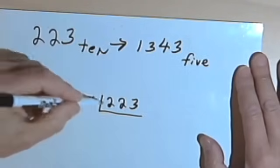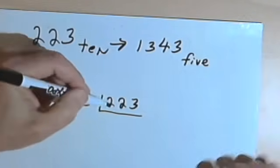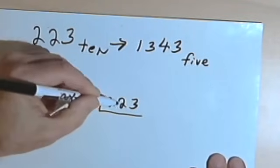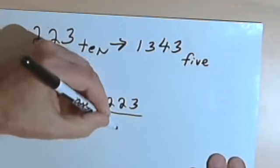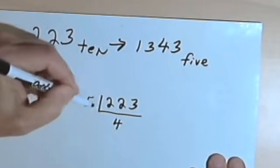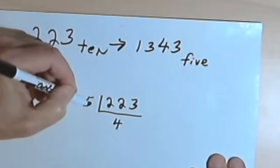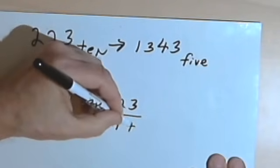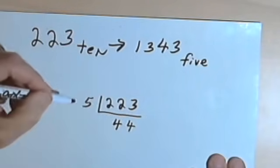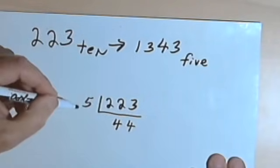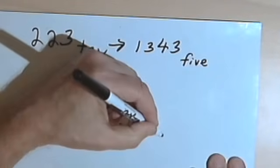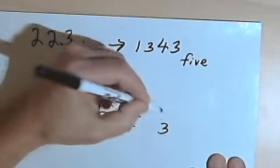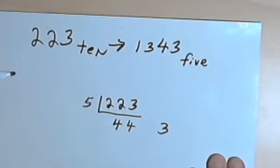5 goes into 223 — it goes into the 22 part 4 times with 2 left over, and then 5 into 23 is also 4, giving a remainder of 3. I'm going to write that remainder of 3 off to the left.